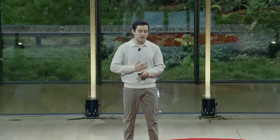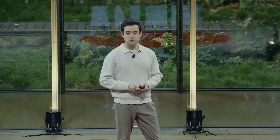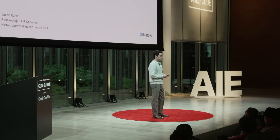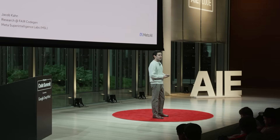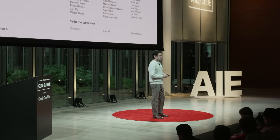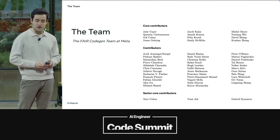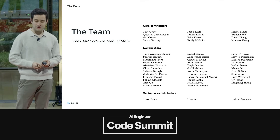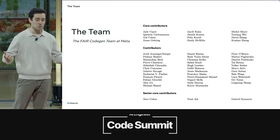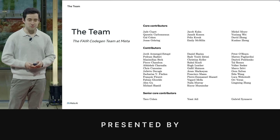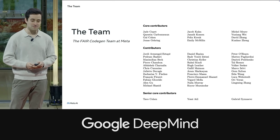Great to be here everyone. I'm Jacob Kahn. I'm a researcher at FAIR at MetAI. I'm going to talk today about the Code World Model, which I'll abbreviate as CWM, and what it means to build world models for computation. This is work done by an incredible team at FAIR — it extends all over the world and I'm very grateful to be collaborating with them.